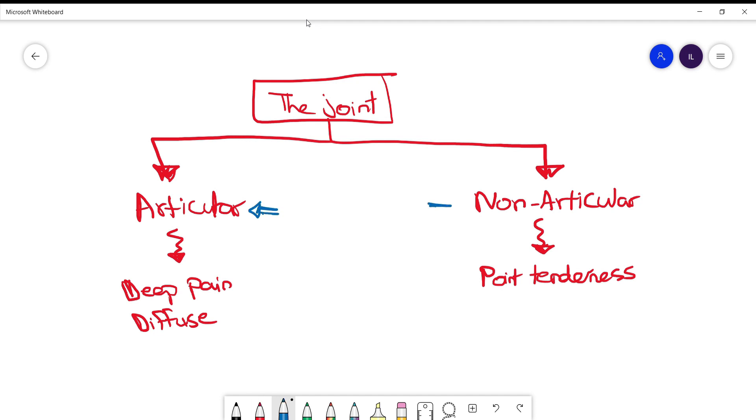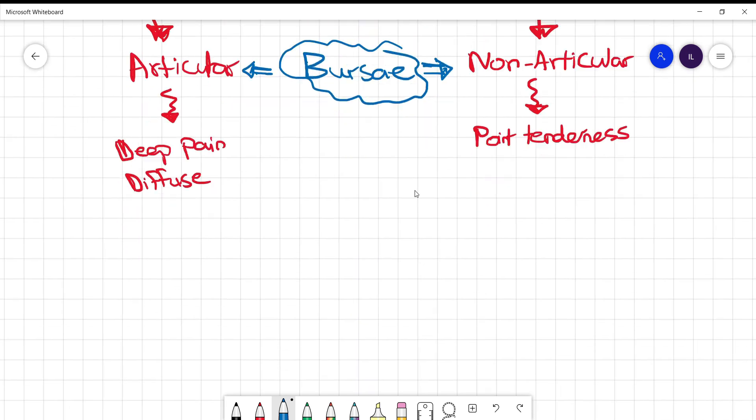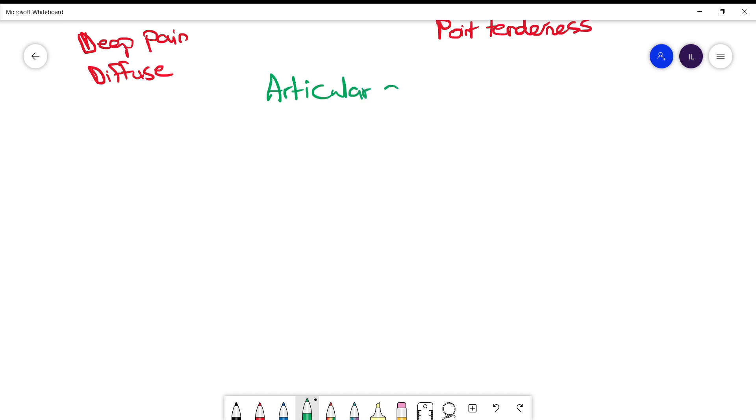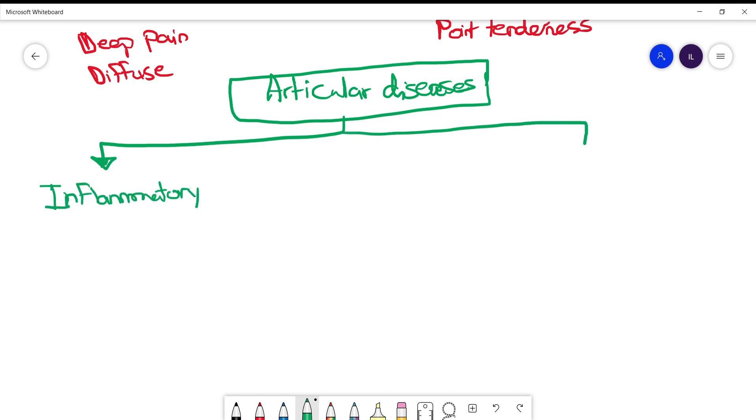It's also important to remember that there is a moderator between the articular and the non-articular parts which is called the bursa. Now we can divide the articular diseases into two main sections. First section is the inflammatory articular diseases, and the second section is the non-inflammatory articular diseases.